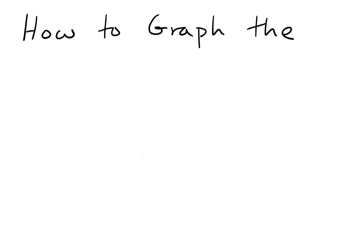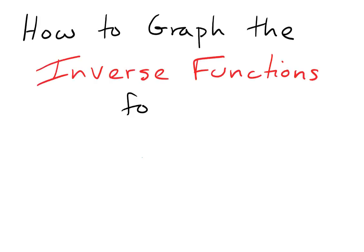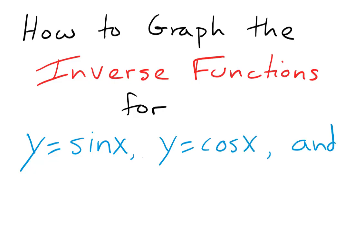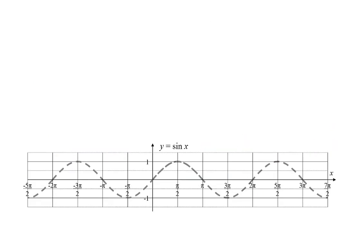In this video, we graph the inverse functions for sine, cosine, and tangent. We start with sine. As we've seen in the previous video, when we have a function that is not one-to-one — a function that does not pass a horizontal line test — we have to restrict the domain to get a part of the function that is one-to-one so that we'll have an inverse that is a function. There are a lot of different parts of the sine curve that we could select for this purpose.